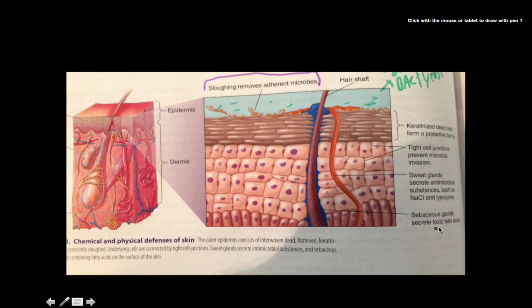Sebaceous glands secreting toxic fatty acids. And our sweat glands secreting sodium chloride. And I didn't mention lysozyme either. So lysozyme is something that is an enzyme, and I'll go ahead and discuss it up here, found in both the sweat and in your saliva.